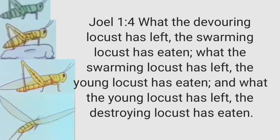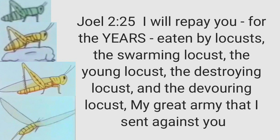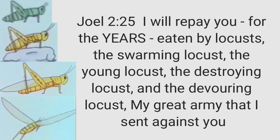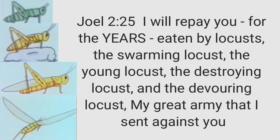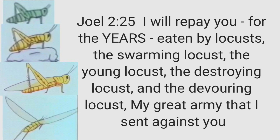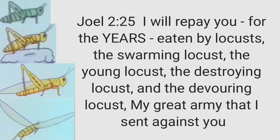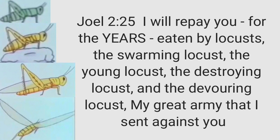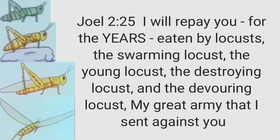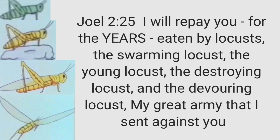This is in Joel chapter 1, and in Joel chapter 2 verse 25, it says, 'I will repay you for the years.' Now I want you to remember the years — the years of the locusts. So these locusts took place over years: the swarming locust, the young locust, the destroying locust, the devouring locust — my great army.